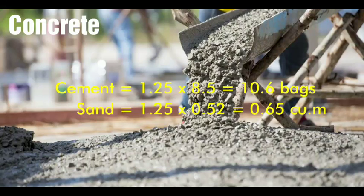For gravel: 1.25 times 0.87 is equal to 1.1 cubic meters of three-quarter size gravel.